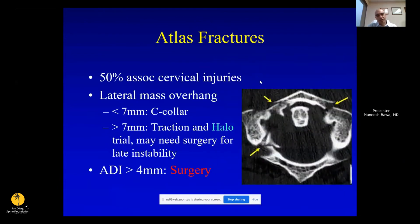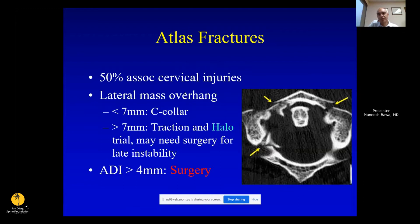Jefferson fractures or C1 ring fractures: the often-cited study uses 7 millimeters of overhang of C1 lateral masses over C2. That was a cadaver study where C1 rings were pulled apart to see how much displacement was needed before the transverse ligament ruptured — not a clinical study. Heller then did a clinical study showing patients with greater than 7 millimeters of overhang did well in either a collar or halo. If the ADI is widened and the transverse ligament is ruptured, they'll likely need surgery. Also, most patients with C1 fractures have other cervical fractures, so look for those.